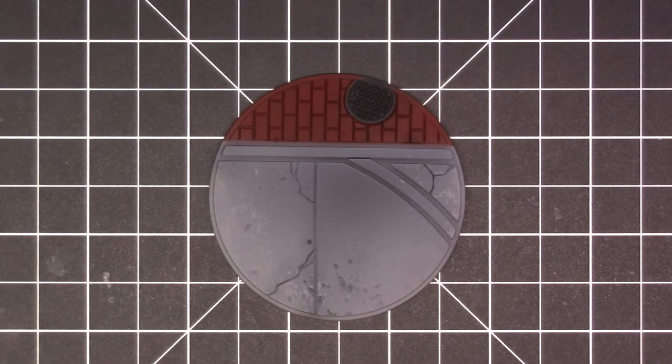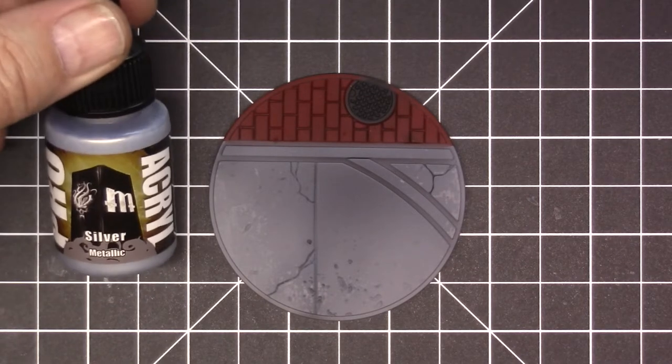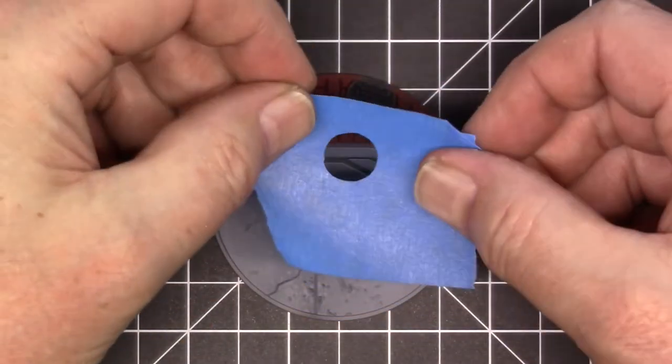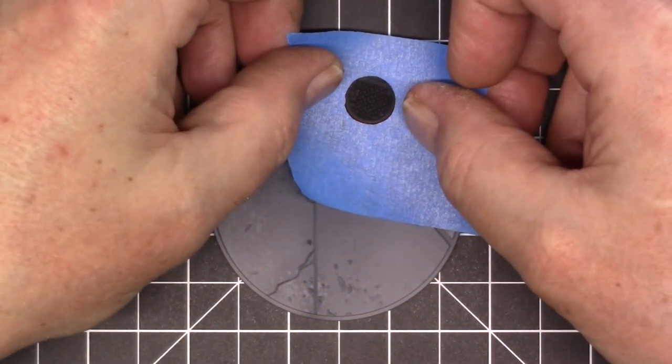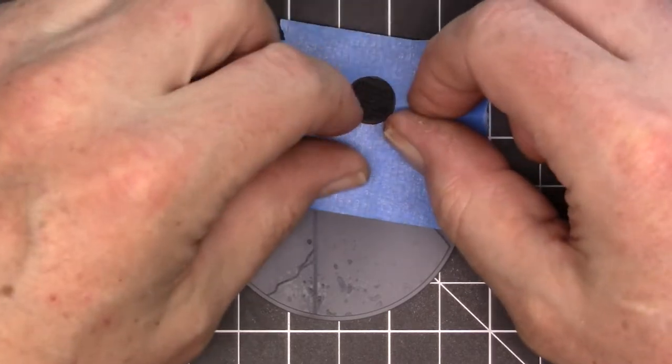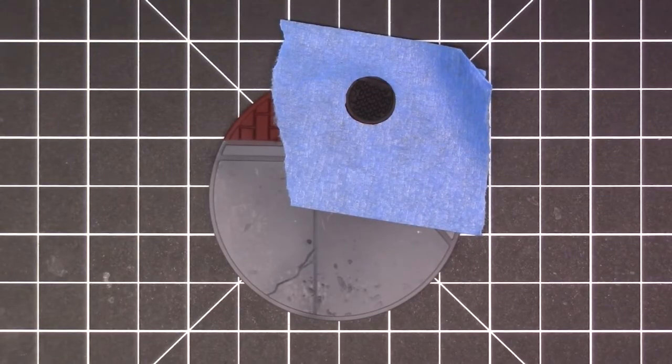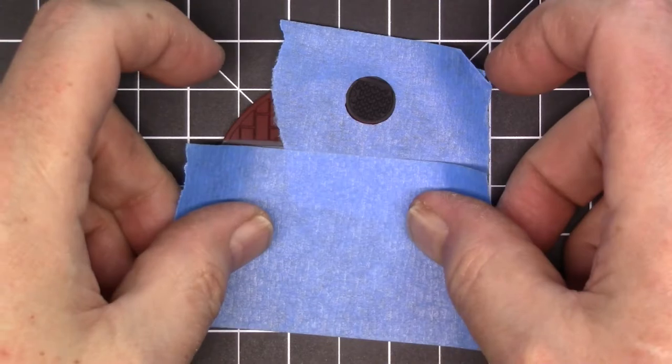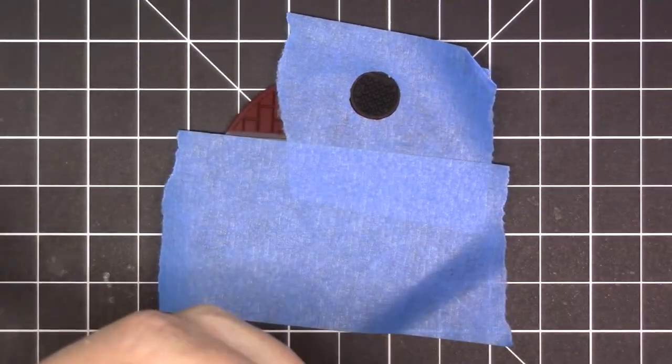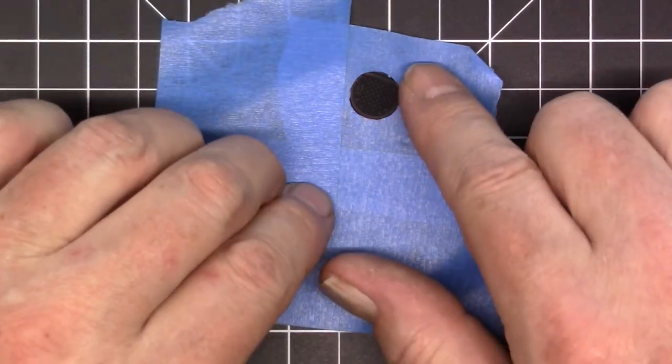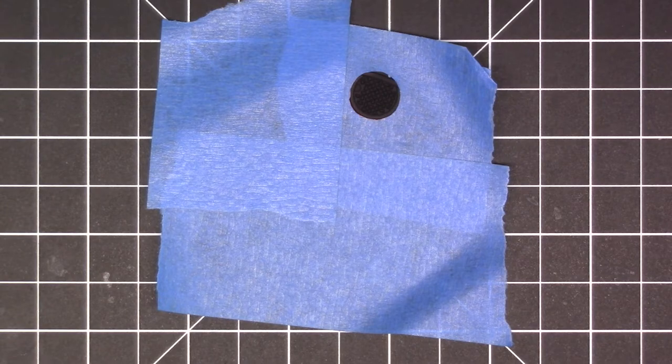Red sprayed, looking pretty good. I took the little round piece off for the manhole cover. What I'm going to do now is spray the manhole cover with the silver metallic. I'm going to take the other piece that I cut that circle out of, tape it on here, and cover the rest with blue painters tape.